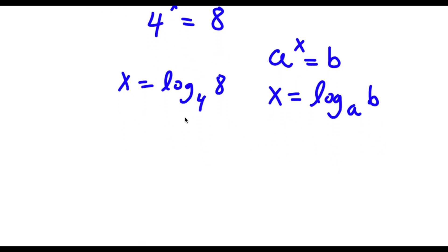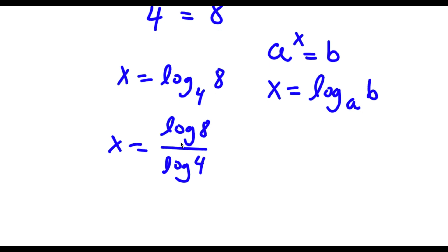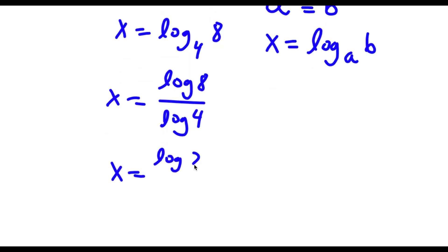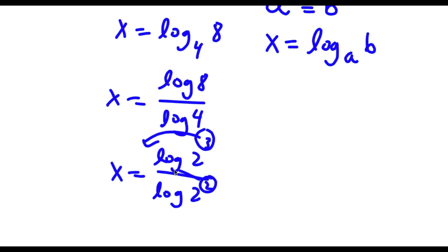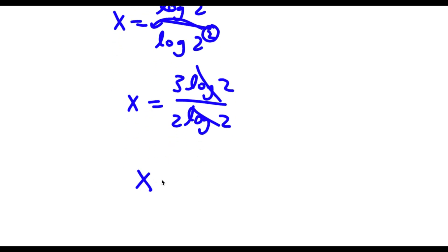This is the same thing as log 8 over log 4. Now log 8 — well 8 is the same thing as 2 to the power of 3, and 4 is the same thing as 2 to the power of 2. So I have log 2 to the power of 3 over log 2 to the power of 2. I can simply move the exponents to the front for both of these, giving x equals 3 times log 2 over 2 times log 2. The log 2 terms cancel out, so I'm again left with x equals 3 over 2.